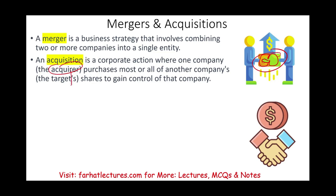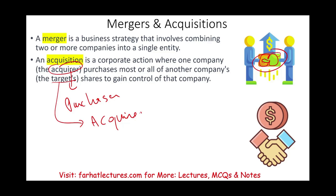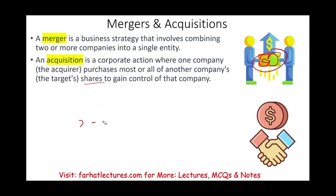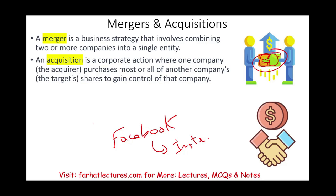An acquisition is a corporate action where one company — the acquirer or the purchaser — purchases most or all of a target company. You have an acquirer and an acquiree. You're acquiring someone else by buying their shares to gain control. An example would be Facebook buying Instagram, or Microsoft buying LinkedIn.